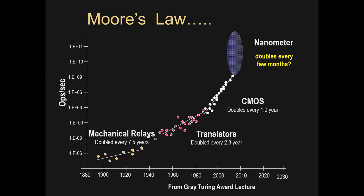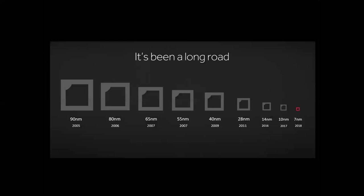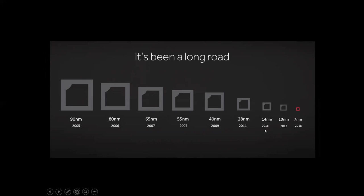Now here is a slide to describe Moore's law. This slide shows it has been a long road. In 2005, the size of the SoC was 90 nanometers. In 2006 it was 80. In 2007 it reached 65, then reduced to 55. In 2009 it went to 40 nanometers. In 2011 it went to 28 nanometers. In 2016 it was 14. In 2017 it went to 10. And by 2018 it had become 7 nanometers. Just see the difference — from 90 we were able to get it down to 7.